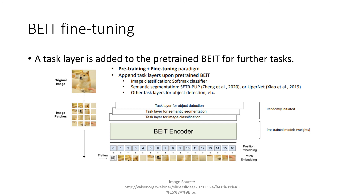We perform fine-tuning by appending our task layer to our pre-trained weights. The examples are outlined in the picture: these can be image classification using a softmax classifier, semantic segmentation using UperNet, object detection, and other task layers. One important thing to note is that our BEIT encoder has pre-trained weights, whereas the task layer is randomly initialized.